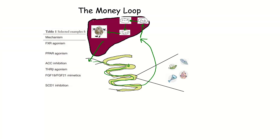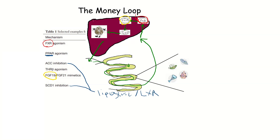Now let's follow the money again. Look at the drugs the pharmaceutical industry is investing in to deal with fatty liver disease. FXR agonism — what does FXR do? It shuts down the Aryl hydrocarbon receptor in the liver. FGF-19 — what does that do? It also shuts down the Aryl hydrocarbon receptor in the liver. PPARs — the AHR is the thing that controls the PPARs. ACC and SCD1 are lipogenic enzymes upregulated by the AHR. And indeed, AHR activates SCD1 and other lipogenic genes via LXR via TIPARP.